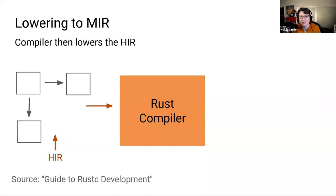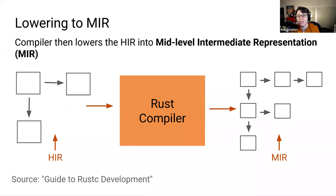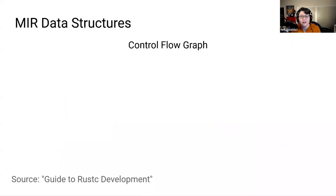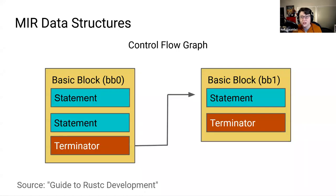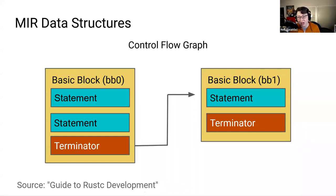The compiler then takes the HIR and lowers it again into the mid-level intermediate representation, also known as the MIR. The MIR is constructed as a control flow graph, and the units within this graph are called basic blocks, identified with values like BB0 and BB1. Within these blocks, each has a sequence of statements that execute in order, and the very last statement in a basic block is known as a terminator. This controls when and how the program proceeds to another basic block.